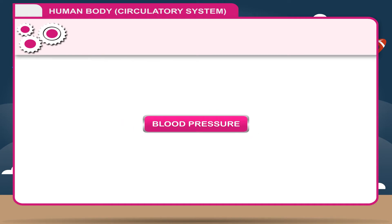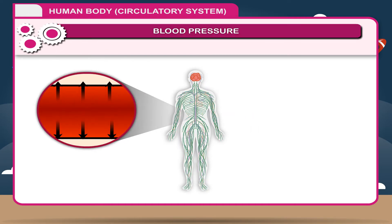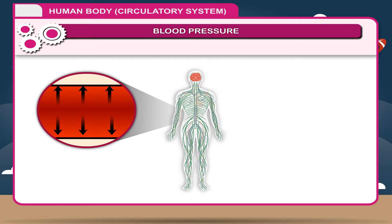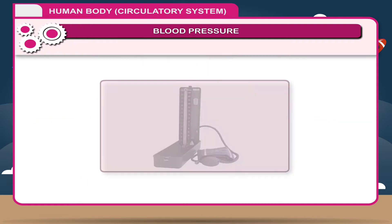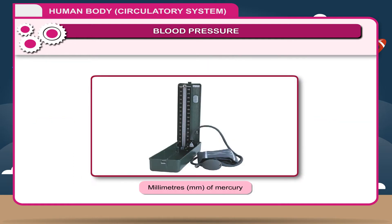Blood pressure is the pressure of circulating blood against the walls of the arteries. It is an important diagnostic index, especially of circulatory function. Blood pressure is measured at two points: the high point at which the heart contracts to empty its blood into the circulation, called systole, and the low point at which the heart relaxes to fill with blood returned by the circulation, called diastole.